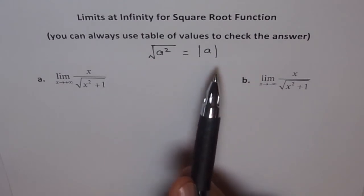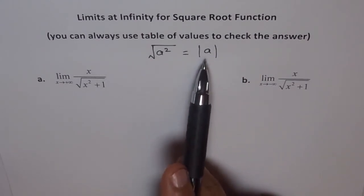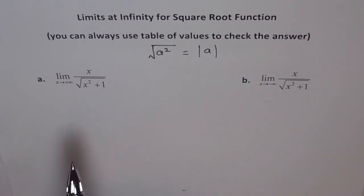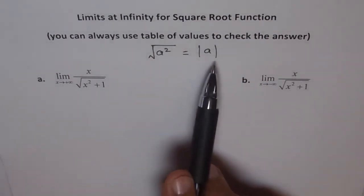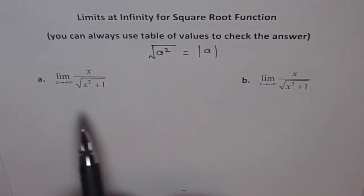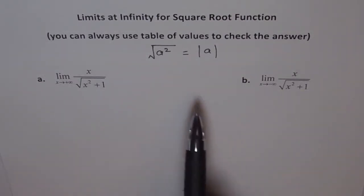For example if I write minus 7 whole square, I don't get minus 7, I get minus of minus 7, I get absolute value of minus 7. That's what we mean to say when we write square root of a equals to absolute a. This is something which we are going to use in all such problems.